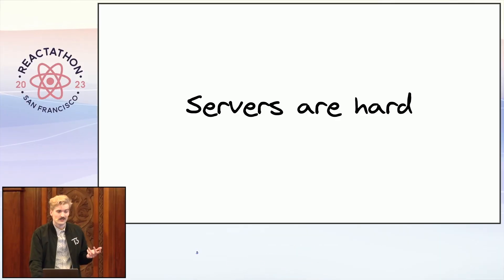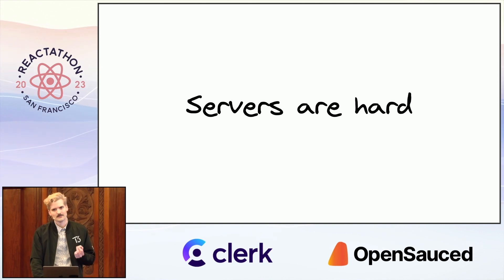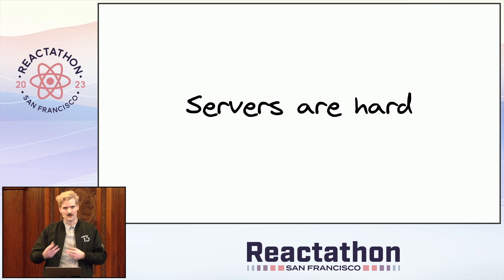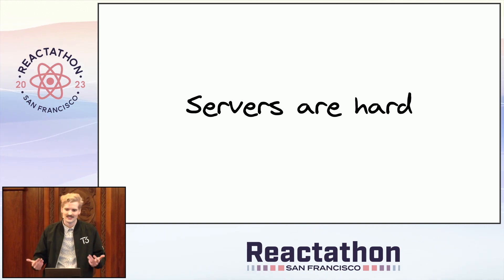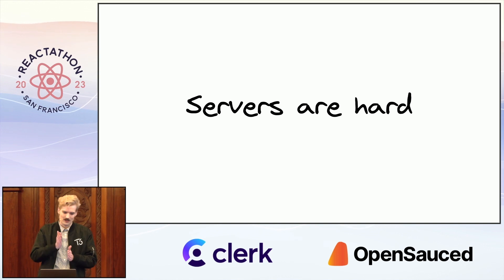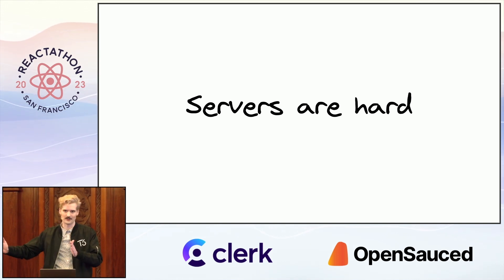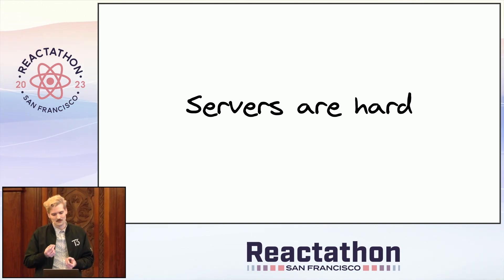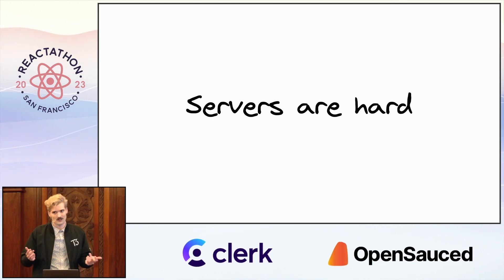Turns out, servers are kind of hard — and in a way that was new to the React team. Previously, the problems React solved were problems that existed on Meta's side. Meta had real UI application problems: real experience, interactivity, and how to ship a good app. Those problems were hard in a different way, mostly at a certain point in the application boundary onwards. So it was not necessarily the right place, team, or mindset to build good server solutions. That's why it took so long. Server components happened really late — most other frameworks had a solution for this much earlier in their journeys.